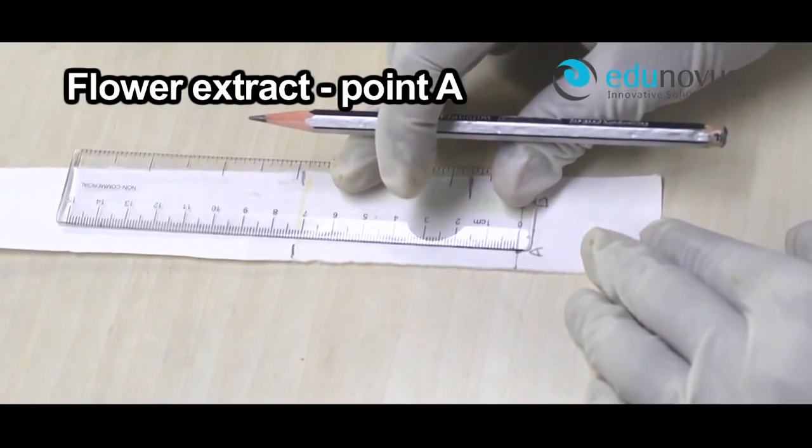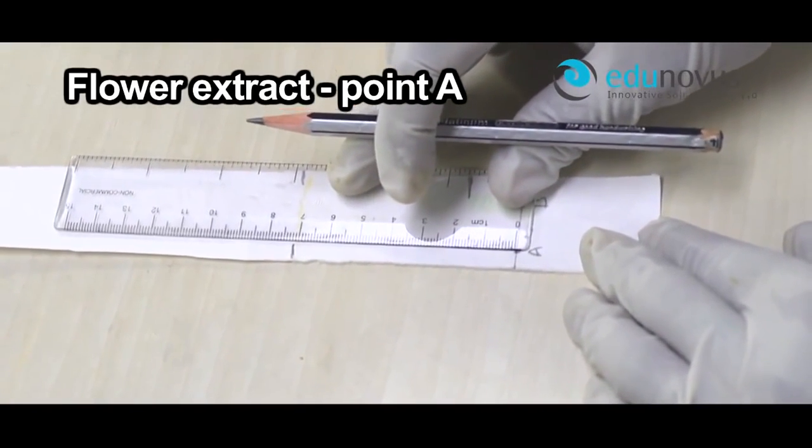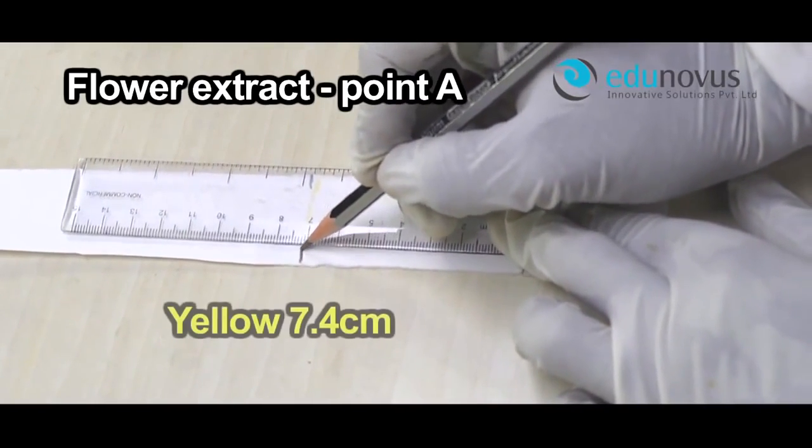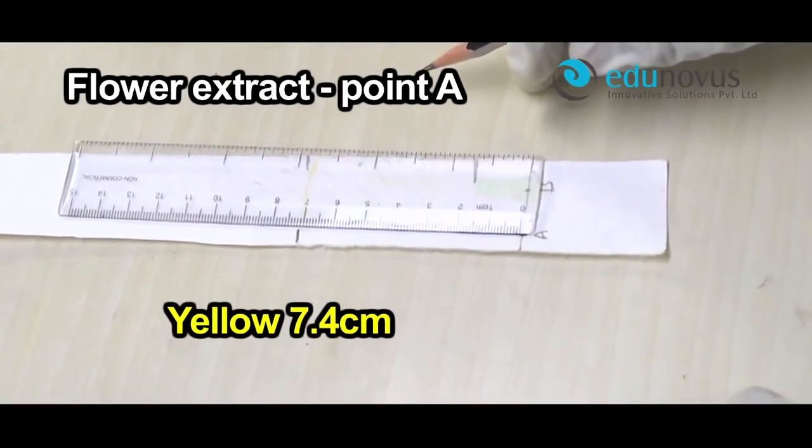In case of flower extract point A, we find only one color spot that is yellow, and the distance traveled by the yellow spot is 7.4 cm.